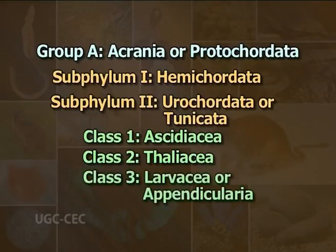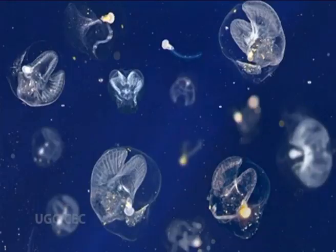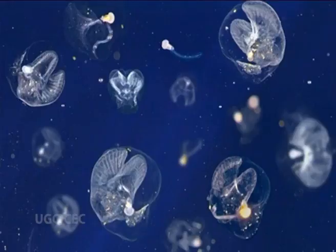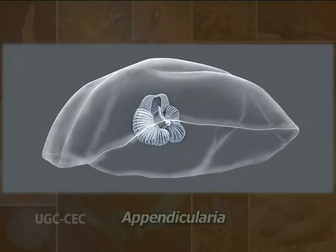Class 3: Larvaceae or Appendicularia. They are widespread, pelagic transparent animals of generally small size. The adults retain many larval features including the tail. Only two gill slits are present and anus is open ventrally on the surface of the body. Examples are Oikopleura and Appendicularia.